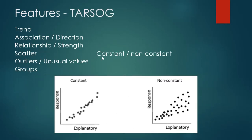Scatter is about the consistency of the scatter — it's either going to be consistent or non-consistent. On a consistent graph, it doesn't matter what value of explanatory variable we have; the scatter is about the same at high or low levels. Whereas in a non-consistent scatter, at low levels of the explanatory variable there's not much variation, but as the explanatory variable increases, the variation or scatter increases.